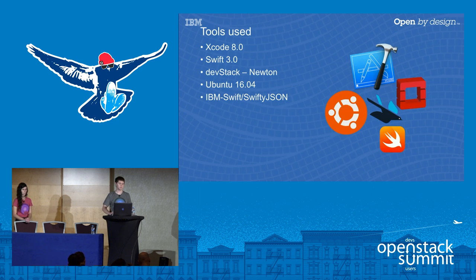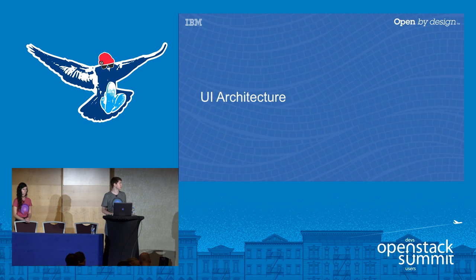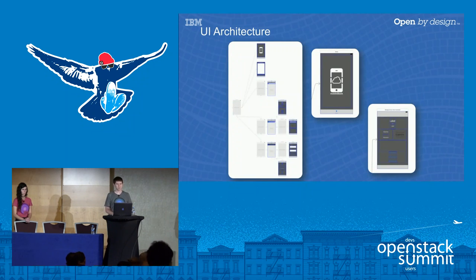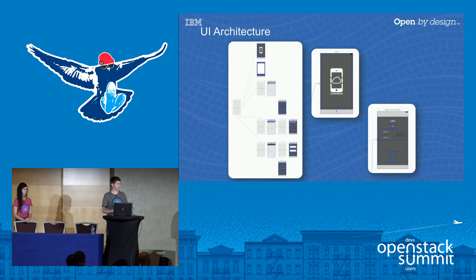The tools we used: Xcode 8 and Swift 3.0, which came together in one release; DevStack Newton; Ubuntu 16.04 for our DevStack installation; and the external library SwiftyJSON from IBM Swift to handle JSON more effectively. For the UI architecture, there are five tabs currently: images, volumes, servers, a tab showing Keystone token retrieval, and the home screen.